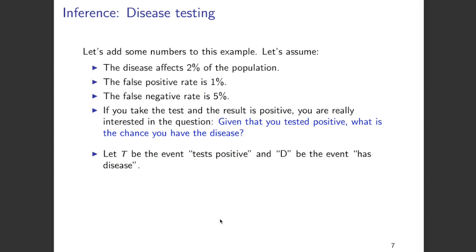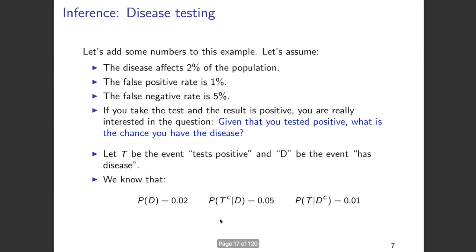To do that, let us introduce two events. Let T be the event that the test gives a positive result, and D be the event that we have the disease. Based on observation we know the probability that the entire population has that disease. That is, the probability of D occurring is 2% of the population. What we are really interested in is probability of D given T — given the fact that we have tested positive, we want to know whether we have the disease or not.